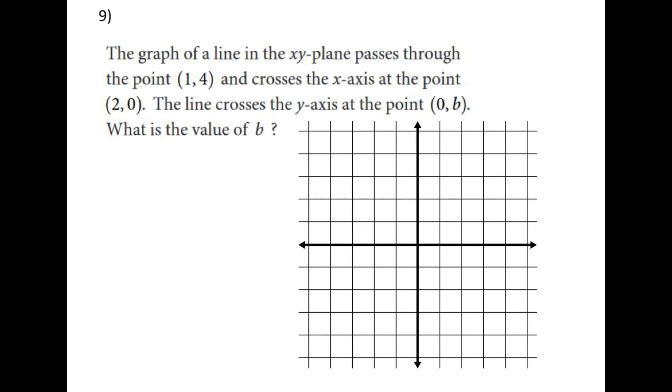For number 9, I'm going to go ahead and plot these points. There's 1 4 and 2 0. And we're told that the line crosses the y axis at the point 0 b. What is the value of b?